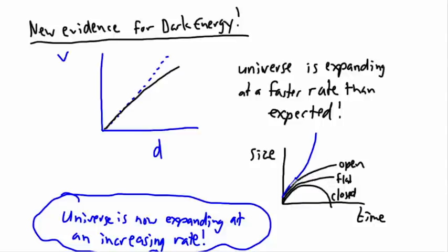See, we expected the universe to always be slowing down. It should always be concave down. All three of these graphs should open downwards. The reason is because gravity is attractive. Anything with mass attracts everything else with mass, so we fully expected the universe to do one of these three things.